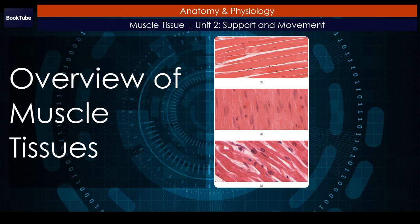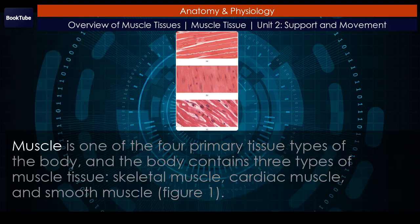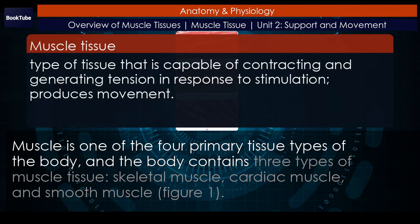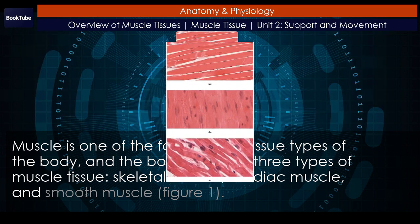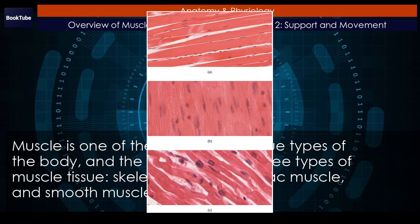Overview of Muscle Tissues. Muscle is one of the four primary tissue types of the body, and the body contains three types of muscle tissue: skeletal muscle, cardiac muscle, and smooth muscle.